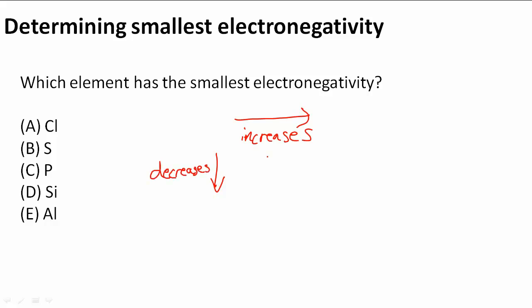So we know we're probably going to look for an element that's further down the periodic table and to the left, because when we go from right to left, electronegativity decreases.